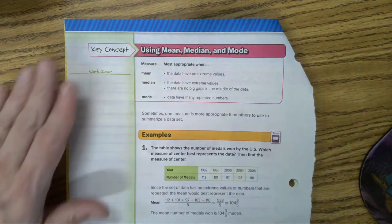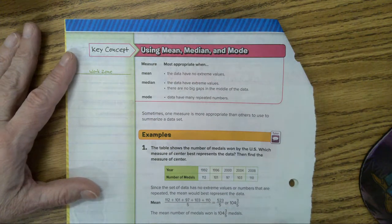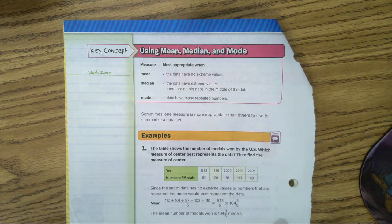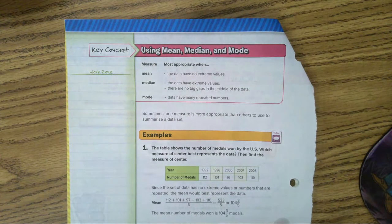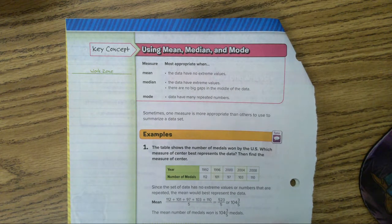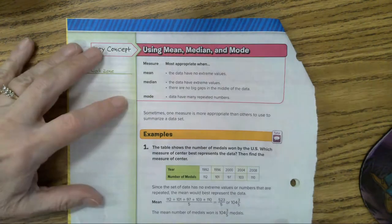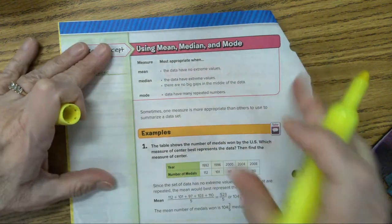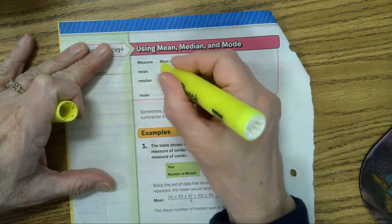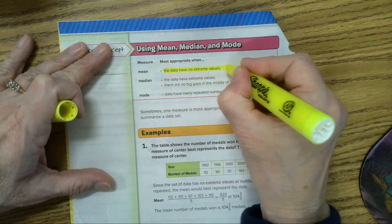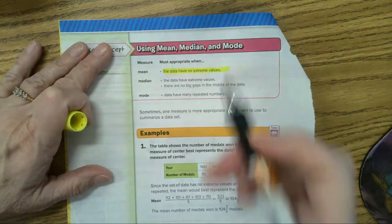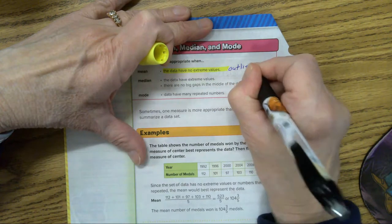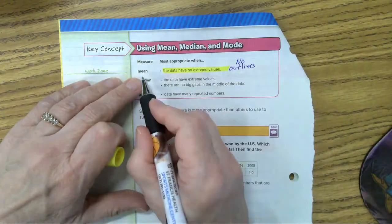Using mean, median, and mode. Most appropriate. Now, this is about deciding when do you use which one of these M words to decide the best measure of center or the best way to give an estimate about your data. So, let's look at this. The first one, mean. When do you use the mean kids? When the data have no extreme values. What's our word for extreme values? Outliers. If it has no outliers, you use the mean.